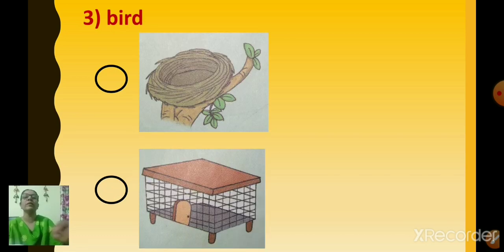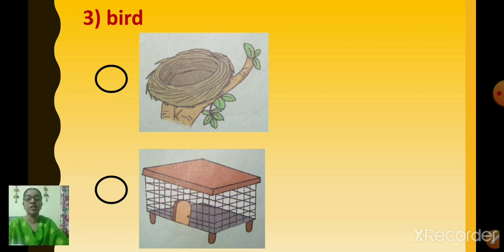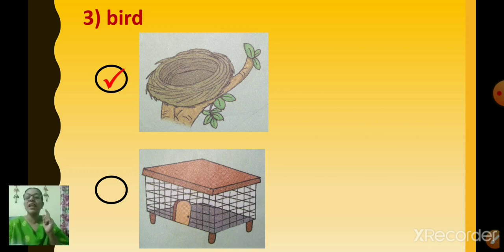Next one. The next animal is bird. Where do the bird live? Does it live in the nest or in the coop? The first picture is of nest and the other is coop. Yes, the bird lives in a nest. Click on nest. Bird builds its nest on the tree, so bird's home is known as nest.